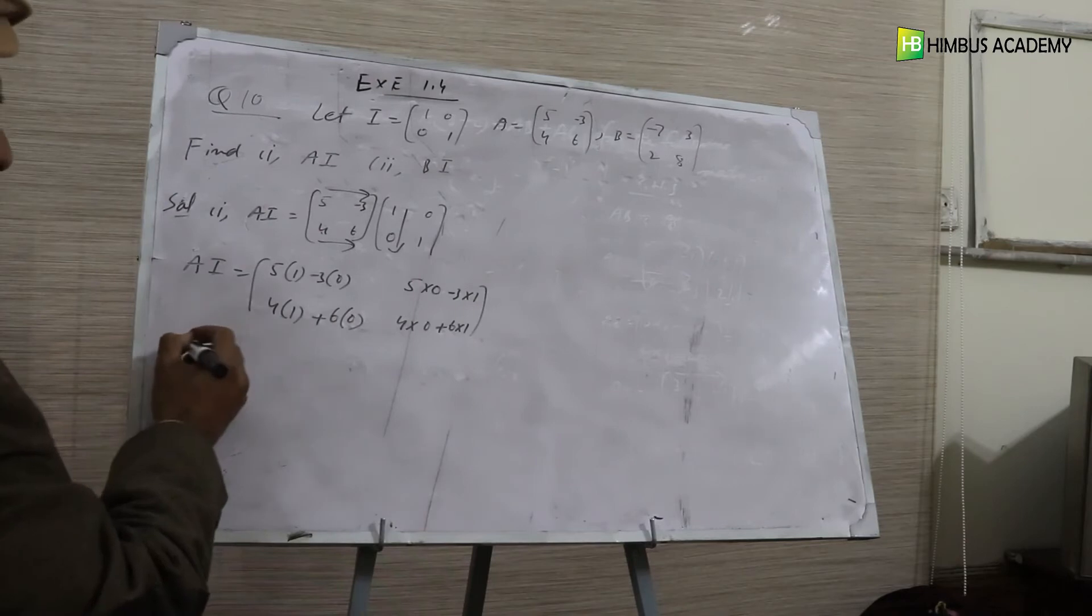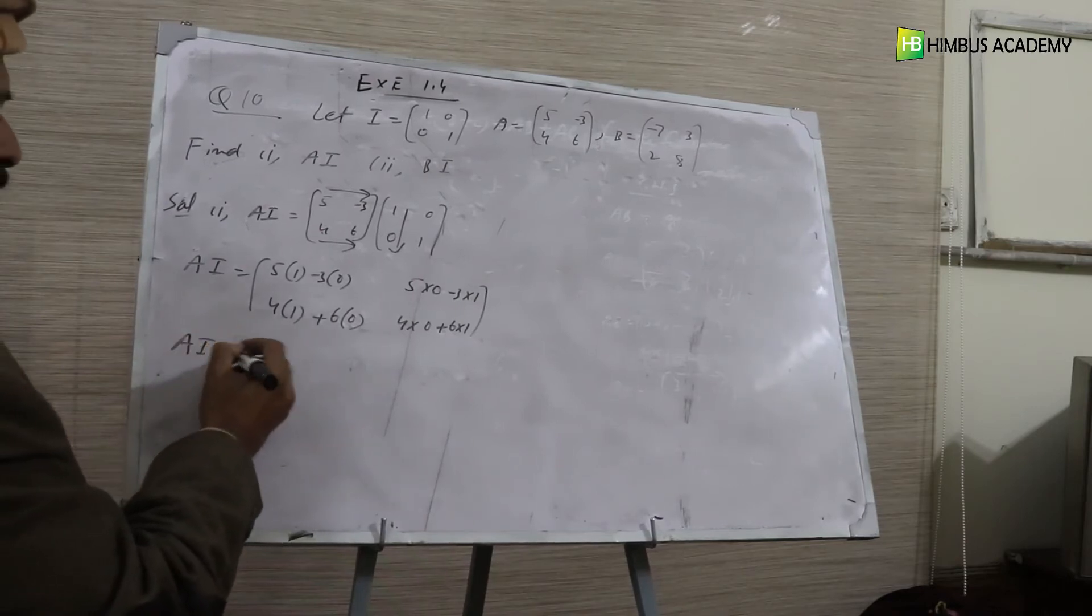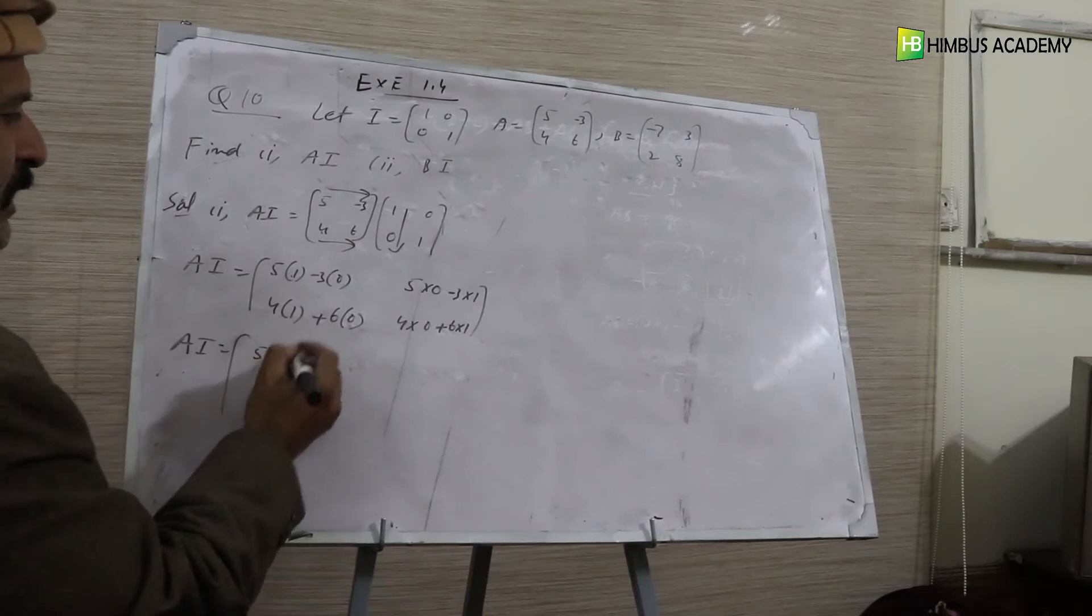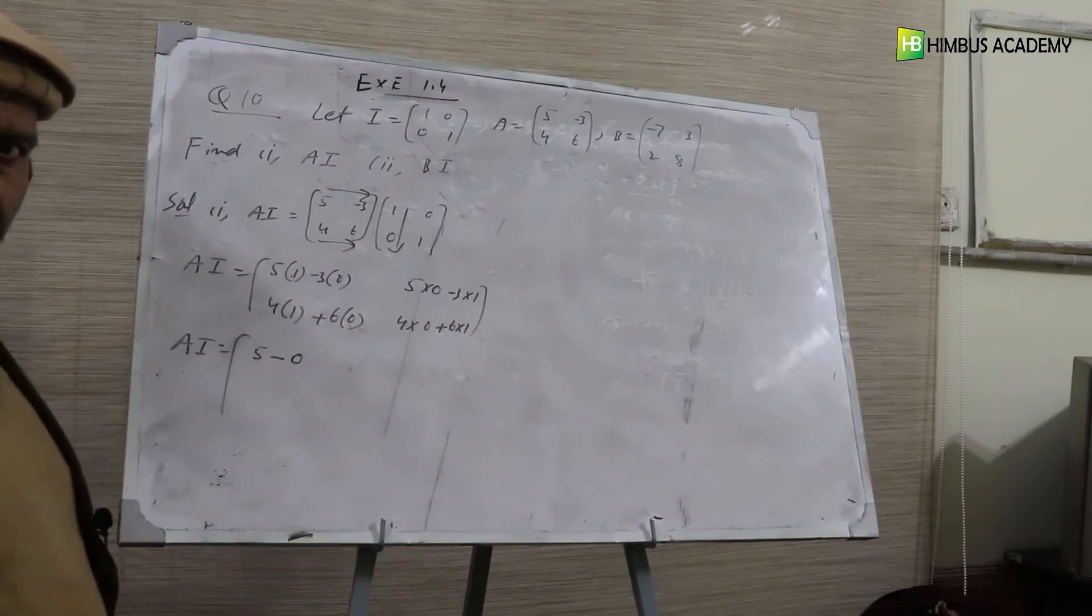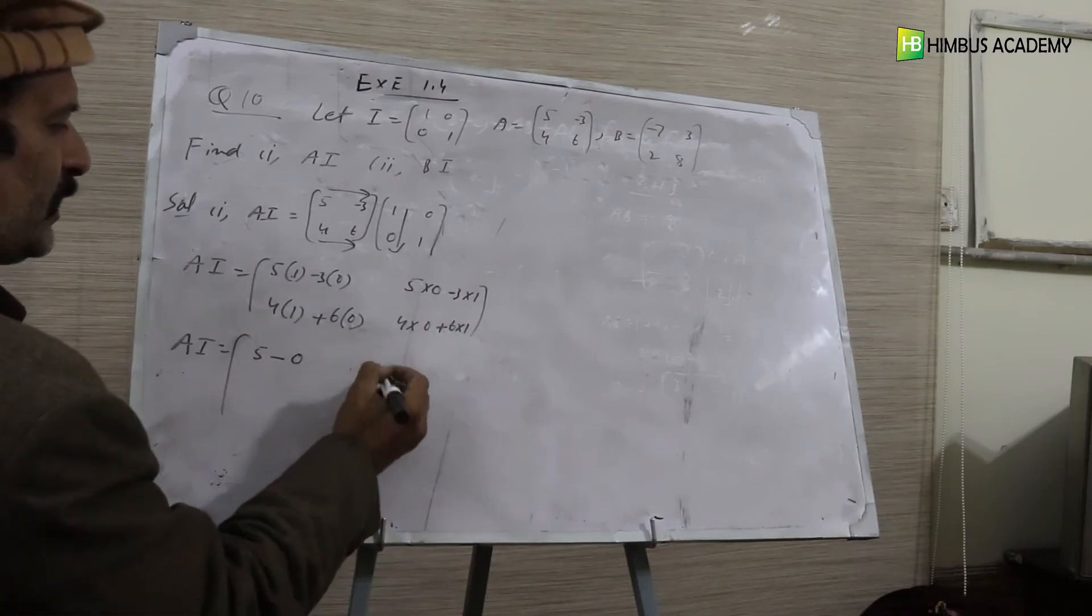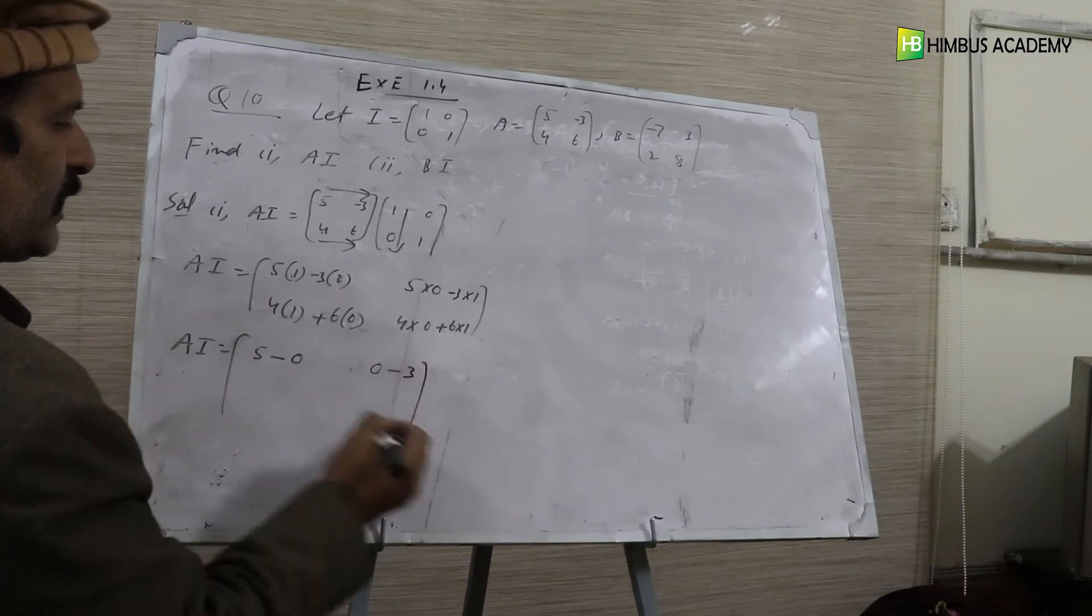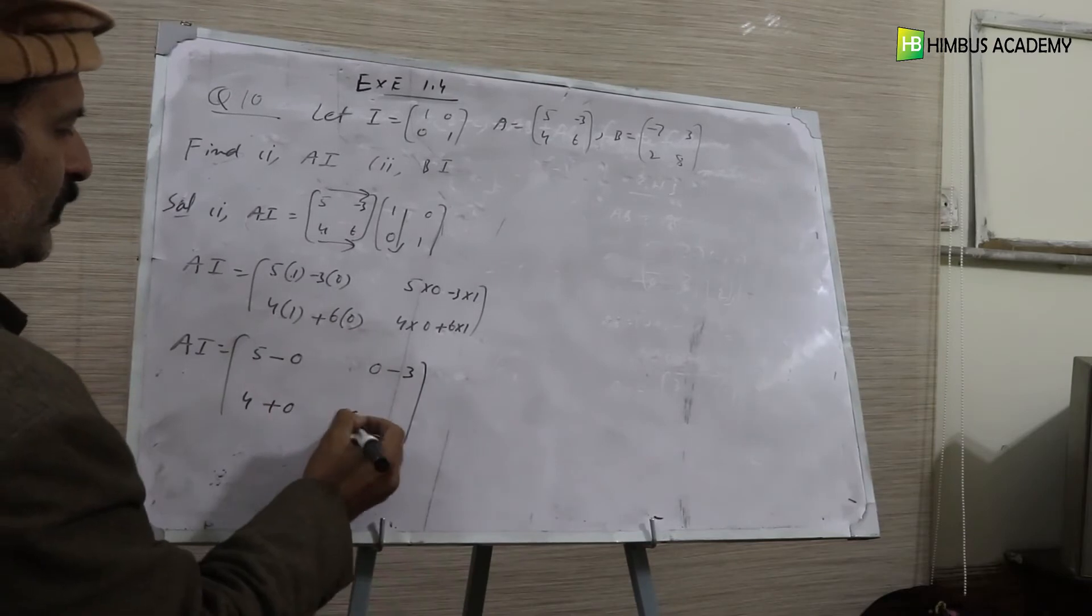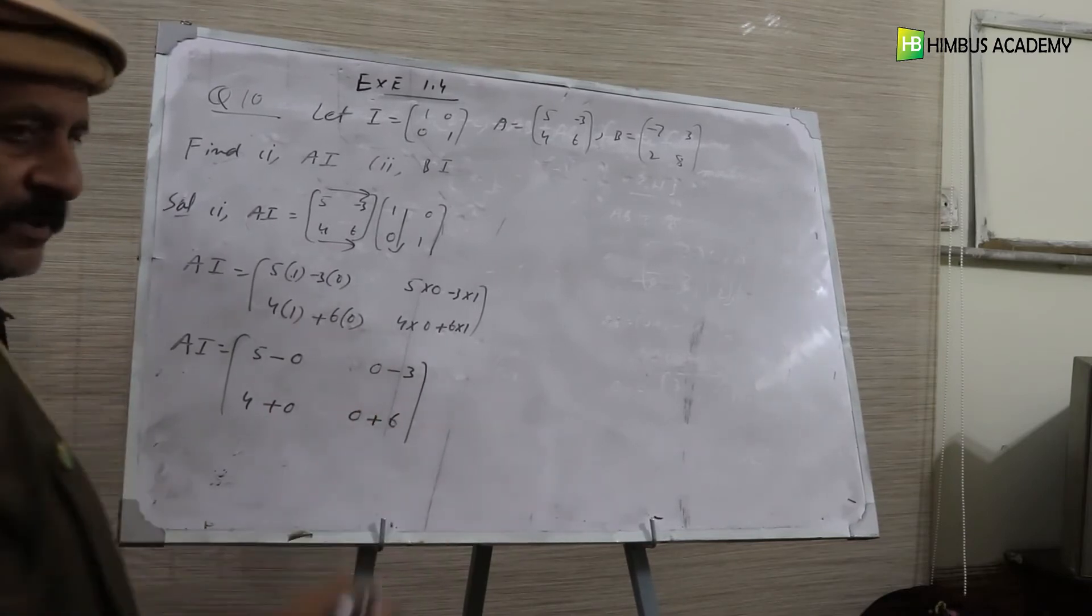Now we simplify further. 5, 1, 0 is 5, minus 3, 0, 0 is 0. The zero step is not necessary but we explain it. 5, 0, 0 is 0, minus 3, 1, 0 is 3. 4, 1, 0 is 4, plus 6, 0, 0 is 0. 4, 0, 0 is 0, plus 6, 1, 0 is 6.